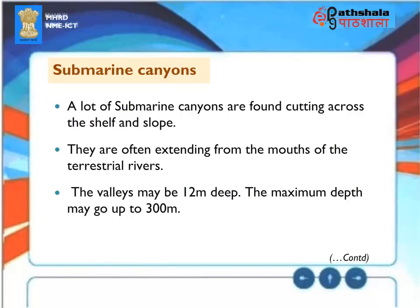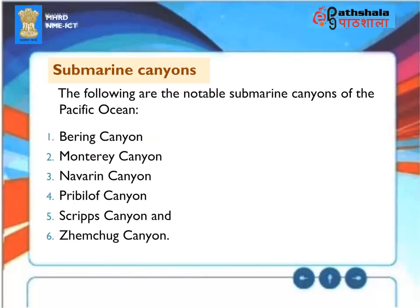Submarine Canyons: Many submarine canyons are found cutting across the shelf and slope, often extending from the mouths of terrestrial rivers. The valleys may be 12 meters deep, with a maximum depth of up to 300 meters. Notable submarine canyons of the Pacific Ocean include the Bering Canyon, Monterrey Canyon, Navarren Canyon, Pribilof Canyon, Scripps Canyon, and Zemchug Canyon.